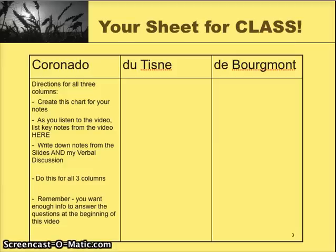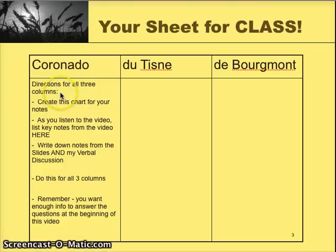For this activity, this is what your sheet needs to look like. You need to create this chart — it could just be on the same sheet. We're going to end up turning in this sheet, so this is what you're going to turn in. Three columns: first column for Coronado, next one for Dutton, next one for Bourgemont. As you go through, you'll need to follow these directions labeled under the Coronado column. First, create this chart for your notes as you listen to this video. List any key notes in any of these columns that matter for those people. Write down those notes not just from the slides, not just from what you see, but also from what I'm talking about. Do this for all three columns.